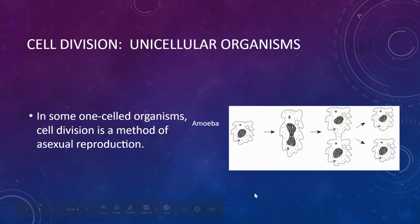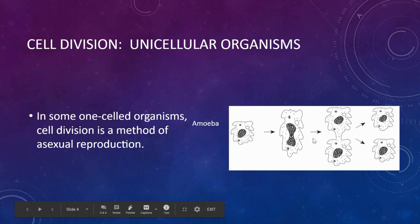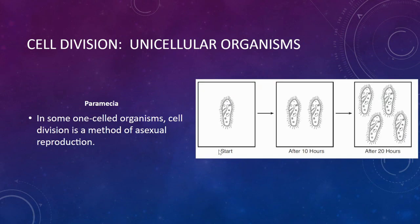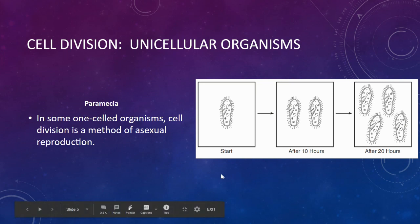In some single-celled organisms, cell division is a method of asexual reproduction. The amoeba seen here is simply splitting, which is a form of asexual reproduction — a mother cell giving birth to two daughter cells that are identical to the mother cell. Paramecia do this as well. Paramecia look like slippers and move around with little cilia — tiny eyelash-like structures they whip around — and they reproduce quite rapidly by simply splitting.